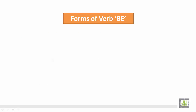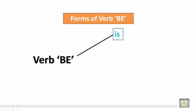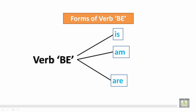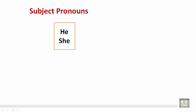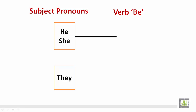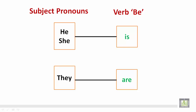Forms of the verb BE: is, am, are. Subject pronouns such as he, she, they. The verb BE correlates with the following: he or she takes 'is'; they takes 'are.' Please note the verb BE forms 'is' and 'are.' He or she is singular, and they is plural.